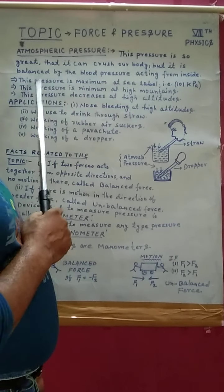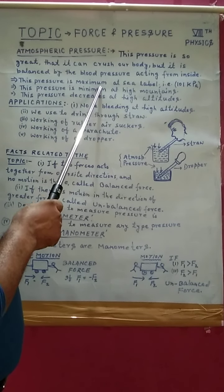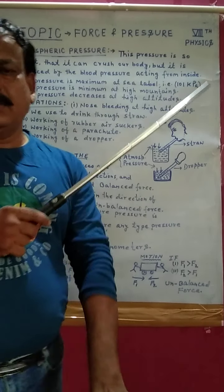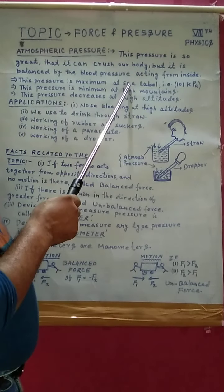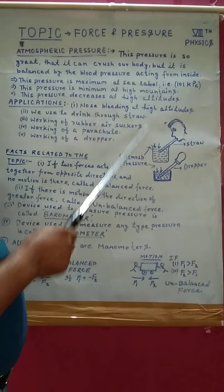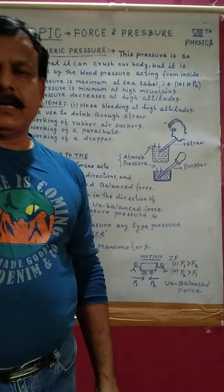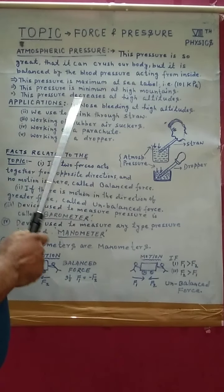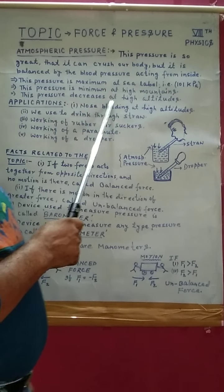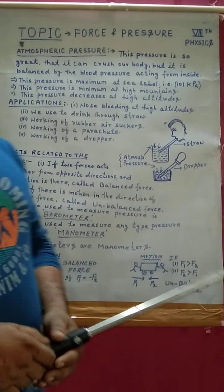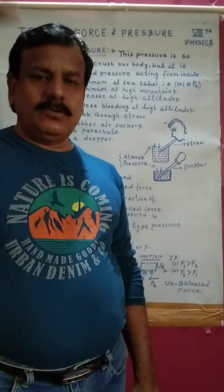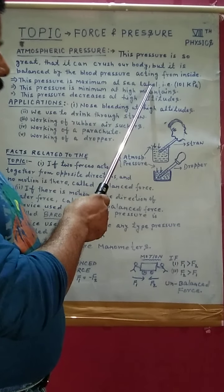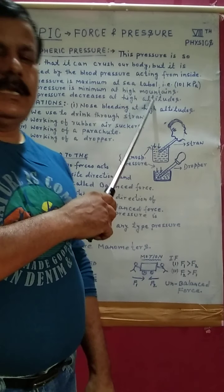Now a few points: this pressure is maximum at the sea level and minimum at high mountains. As you go up to high altitudes, the atmospheric pressure decreases. As you go down, it increases. That is why it is maximum at sea level and minimum at high mountains.